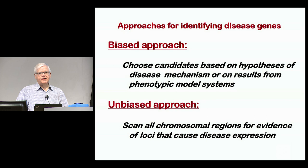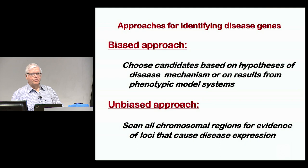Because individual genes being tested simply had to achieve a p-value of 0.05 and everybody said this is involved. That was particularly bad for psychiatric disease, where lots of genes were implicated based on very small, underpowered data sets.